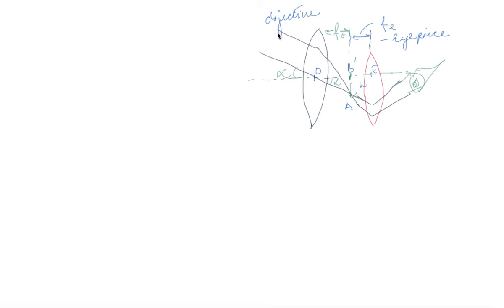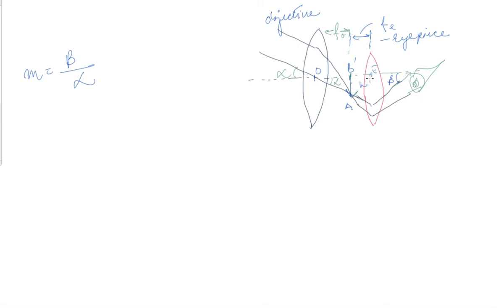So the light rays after refraction tend to intersect and form an image at a particular point. Mathematically, magnification is equal to beta upon alpha — that is, the angle beta divided by angle alpha.